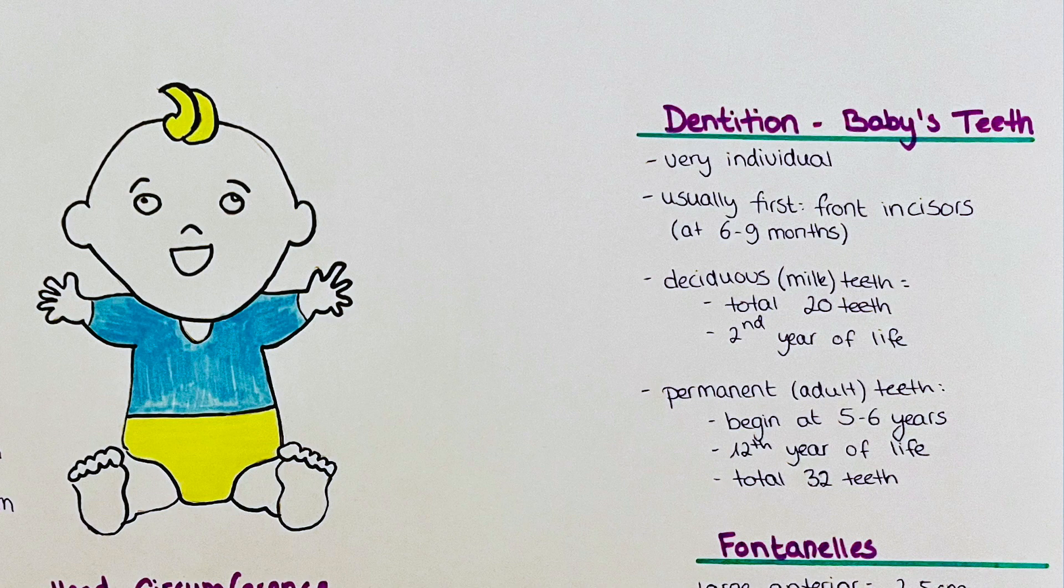Permanent teeth are usually fully developed by the age of 12, except for the last molars, or aka the wisdom teeth. Those can come in much later. The permanent dentition has a total of 32 teeth, so it's 12 more than in the young children who have the deciduous or milk teeth.